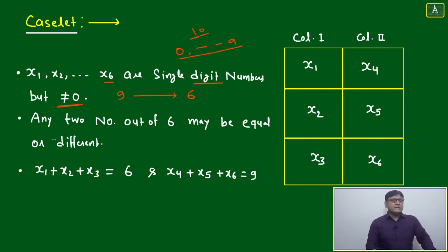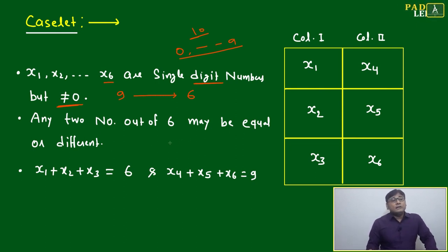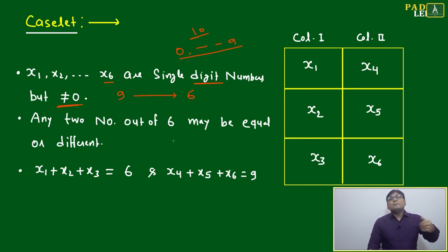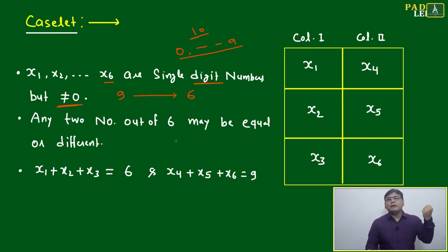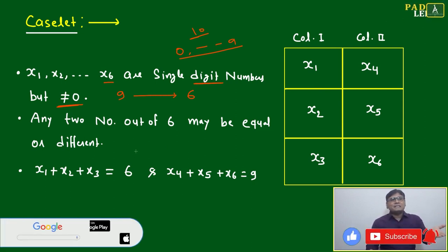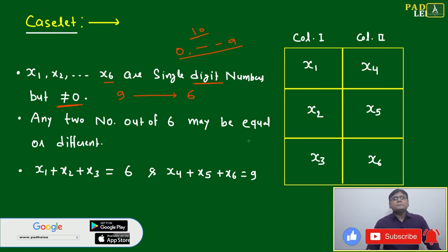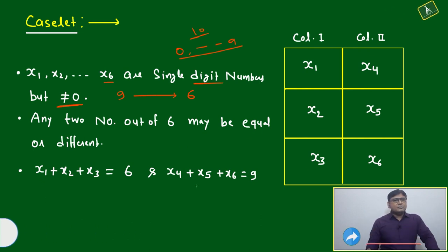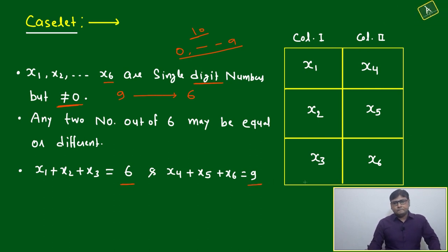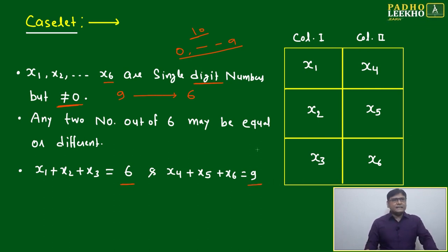The second condition is that any two numbers out of the six may be equal or different. If only different values were allowed, the problem would be much easier — just select any six non-repeating numbers from nine. But here, equal values are also permitted. The third condition gives us: x1 + x2 + x3 = 6, and x4 + x5 + x6 = 9. This is the constant sum concept.